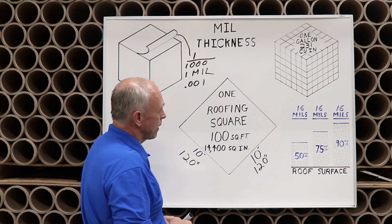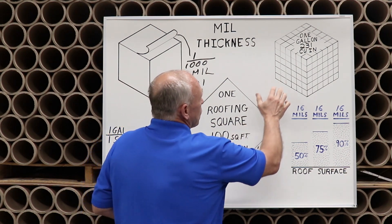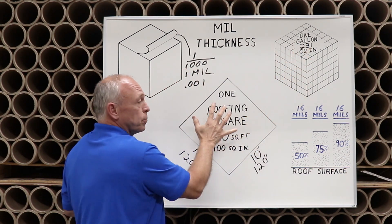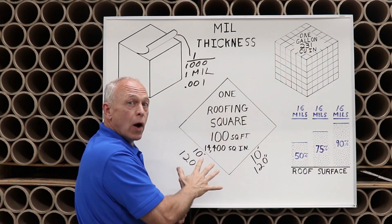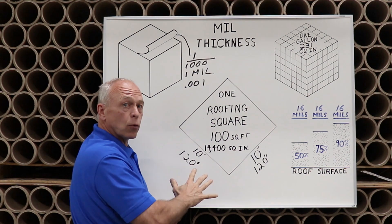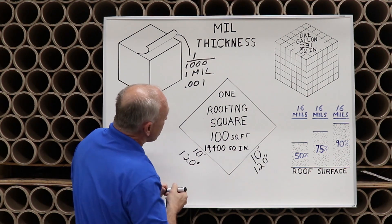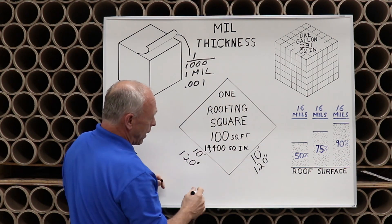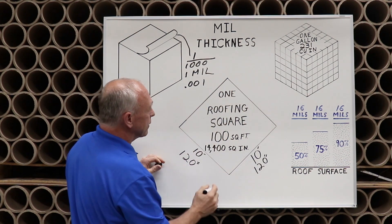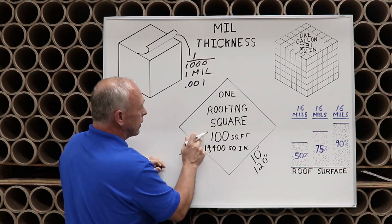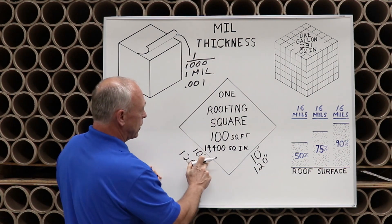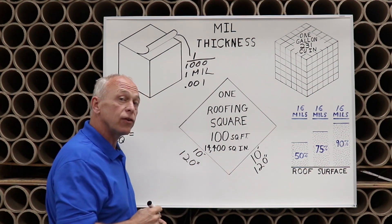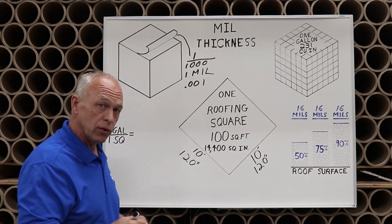Number three: if we want to take this one gallon and spread it over one roofing square, we look at that roofing square and ask how big is that? Well, it's 100 square feet, or 14,400 square inches.